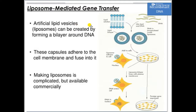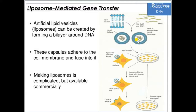The liposome-mediated gene transfer method uses a vectorless approach. You take recombinant DNA and create artificial lipid vesicles called liposomes, forming a bilayer around the DNA. The gene of interest is covered by a lipid bilayer to form a liposome, and these capsules adhere to the cell membrane and fuse into it.